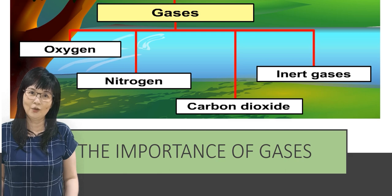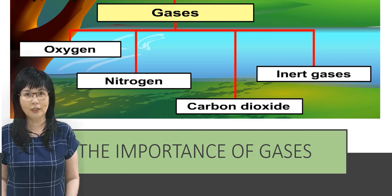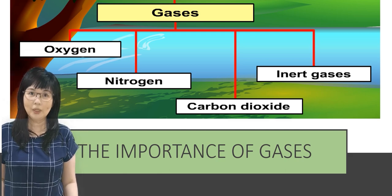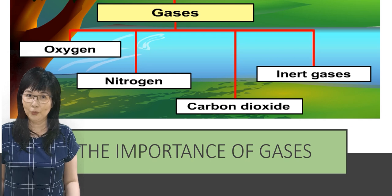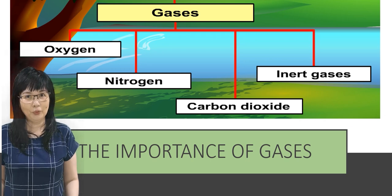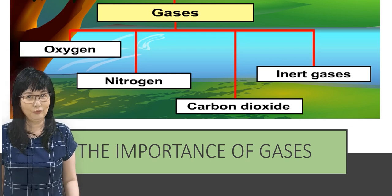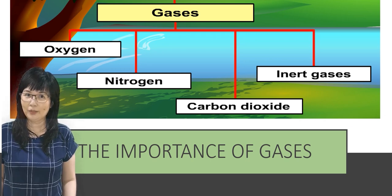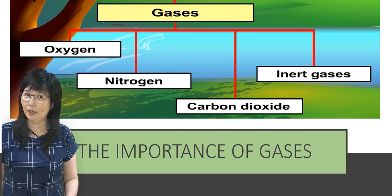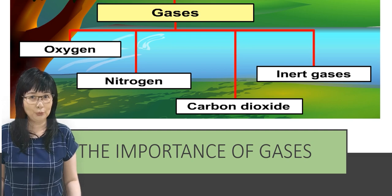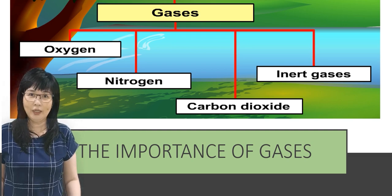Last lesson you learned that air consists of gases. The gases are oxygen, nitrogen, carbon dioxide, and inert gases. Today let's look at the importance of these gases.